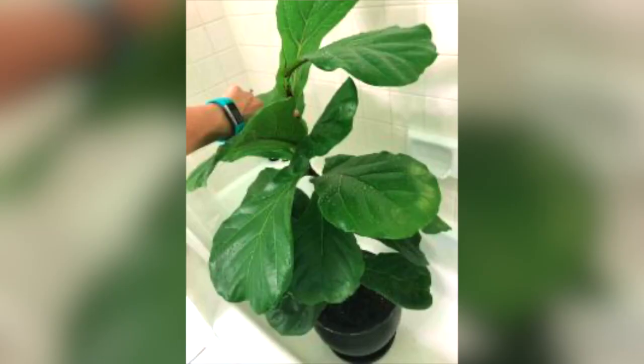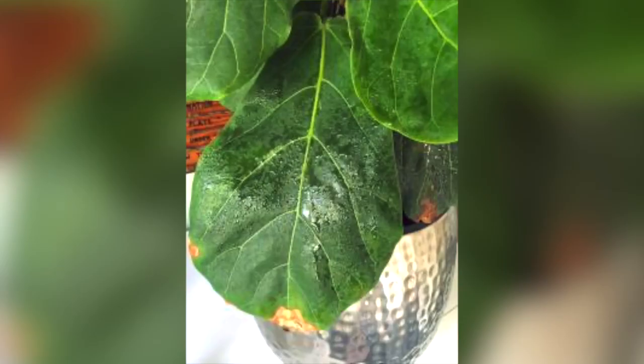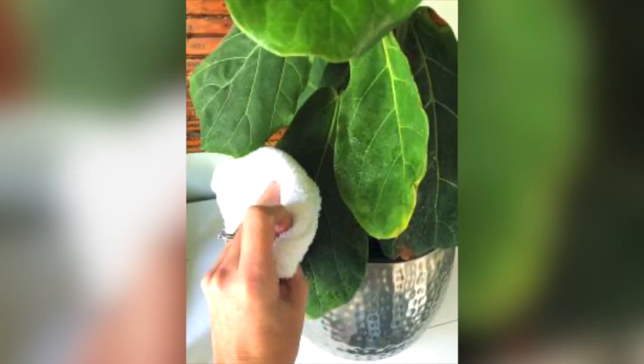It's important to keep your fiddle leaf fig clean. About once a month, give it a quick shower or rinse it off with a hose. Make sure you keep the dust off of your leaves because that can interfere not only with photosynthesis but also its ability to absorb light. One of the most important things fiddle leaf figs love is a lot of light, so by cleaning off the dust, you help your plant absorb more light so it can be happier and healthier.